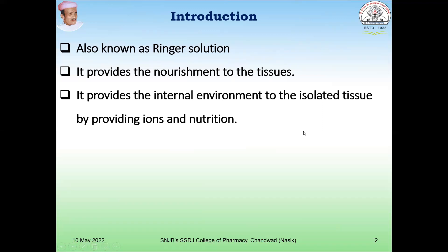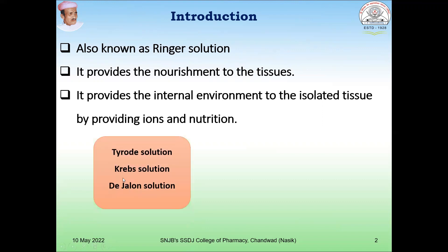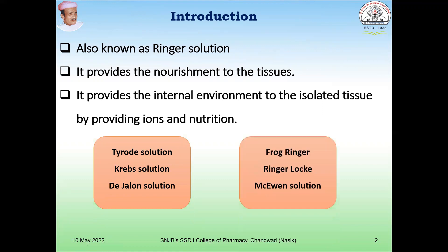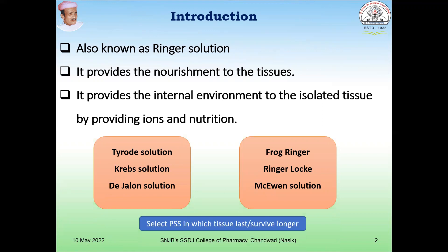There are various types of physiological salt solution, including the Tyrode solution, Krebs solution, De Jalon solution, frog Ringer solution, Ringer-Locke solution, and McEwen solution. The selection or choice of PSS depends on the solution in which the tissue should survive for a longer period of time.